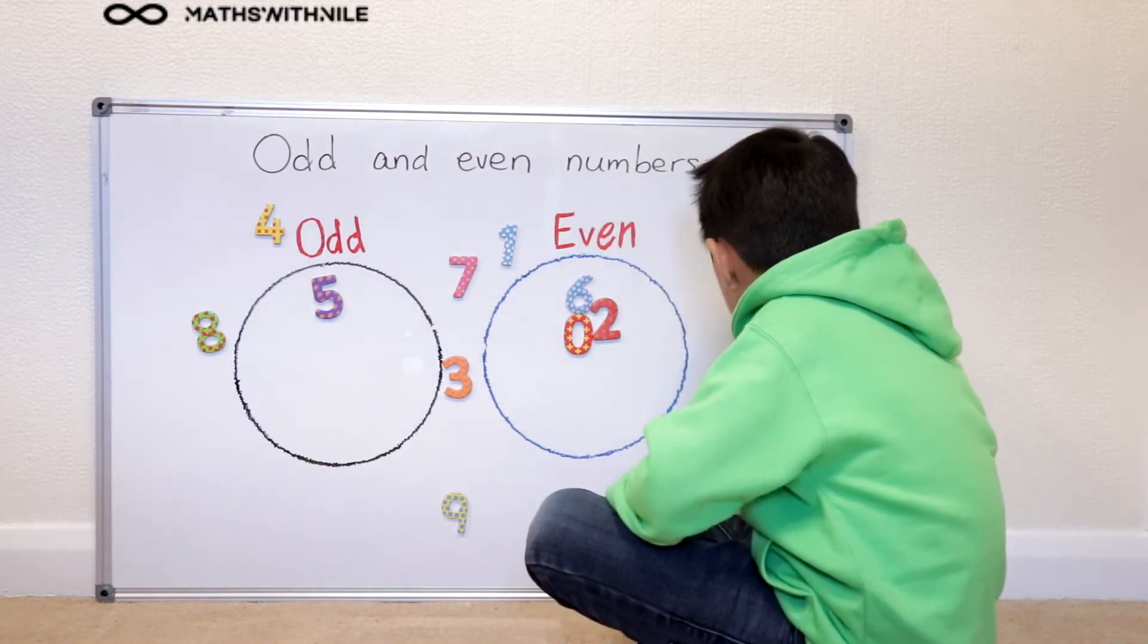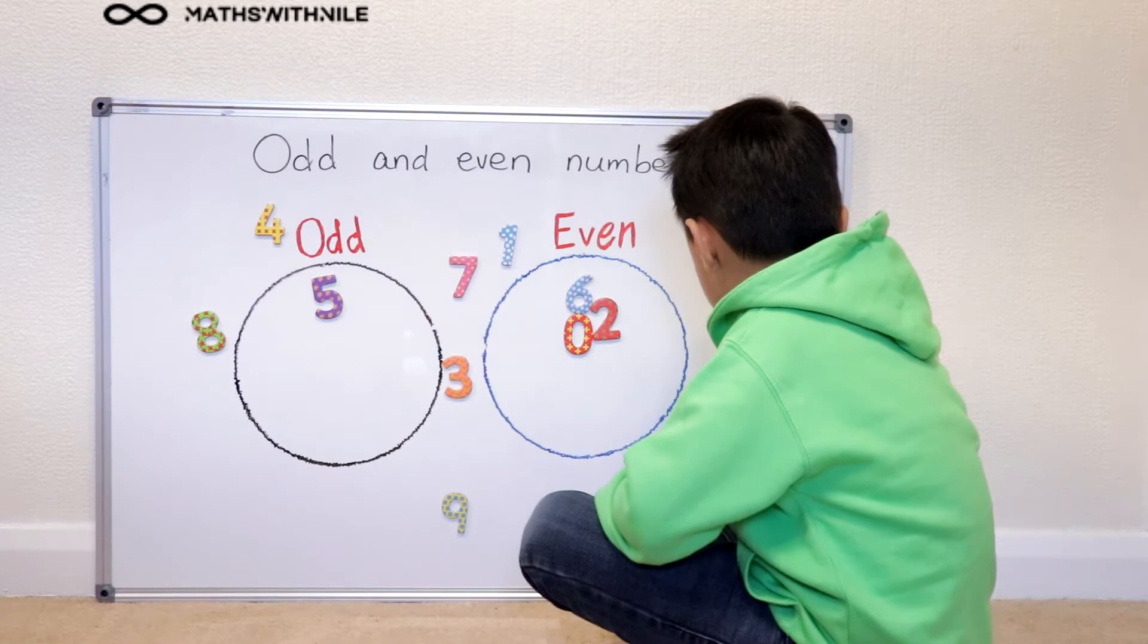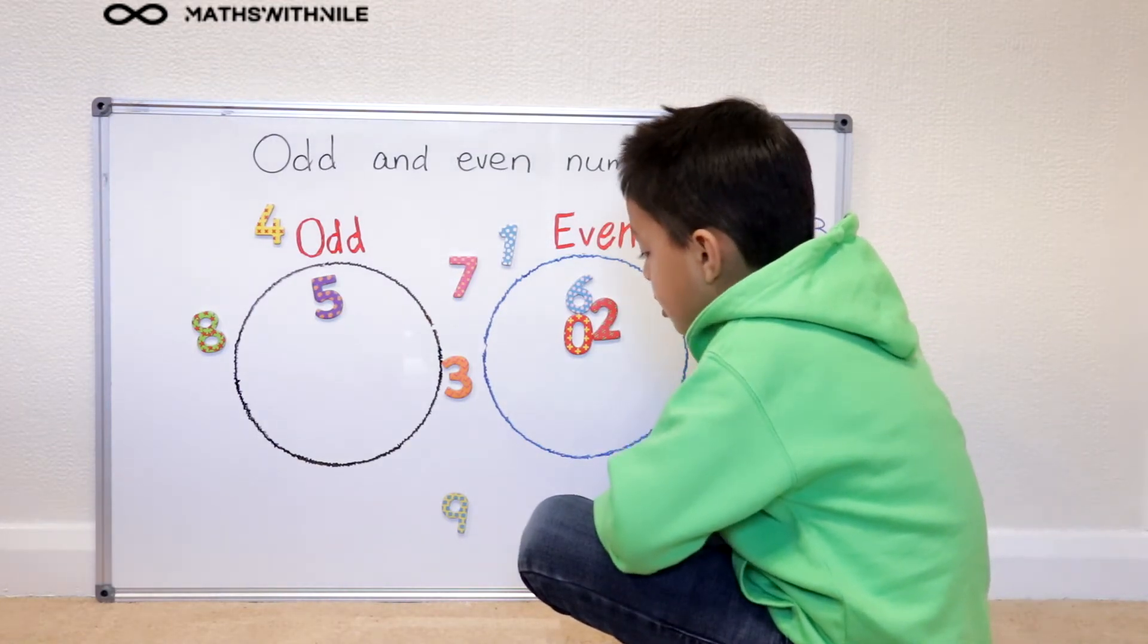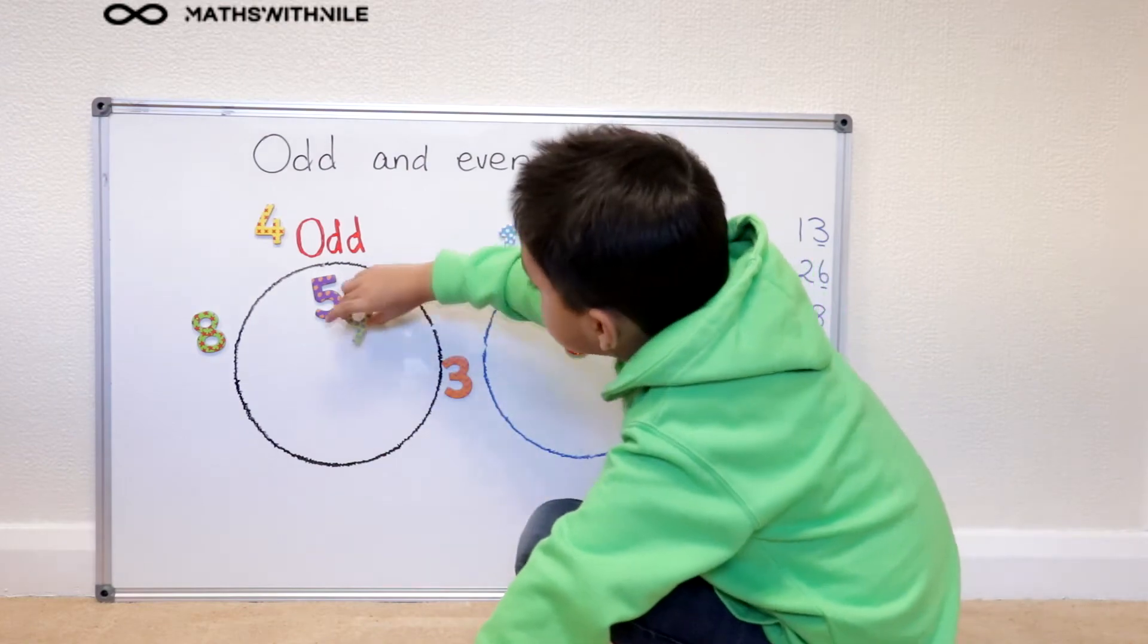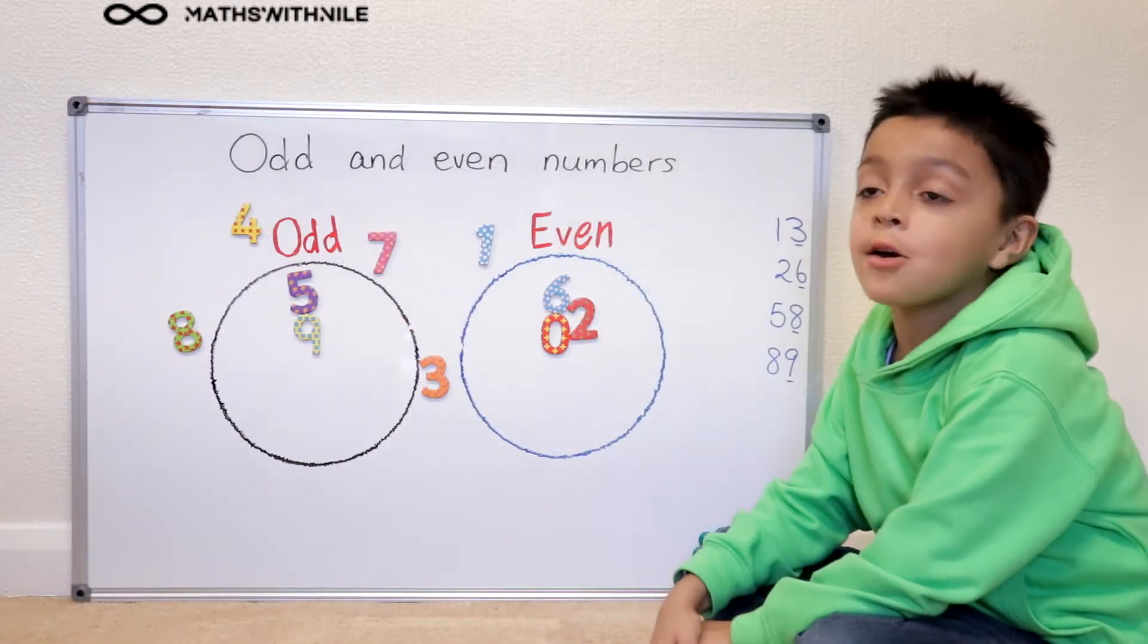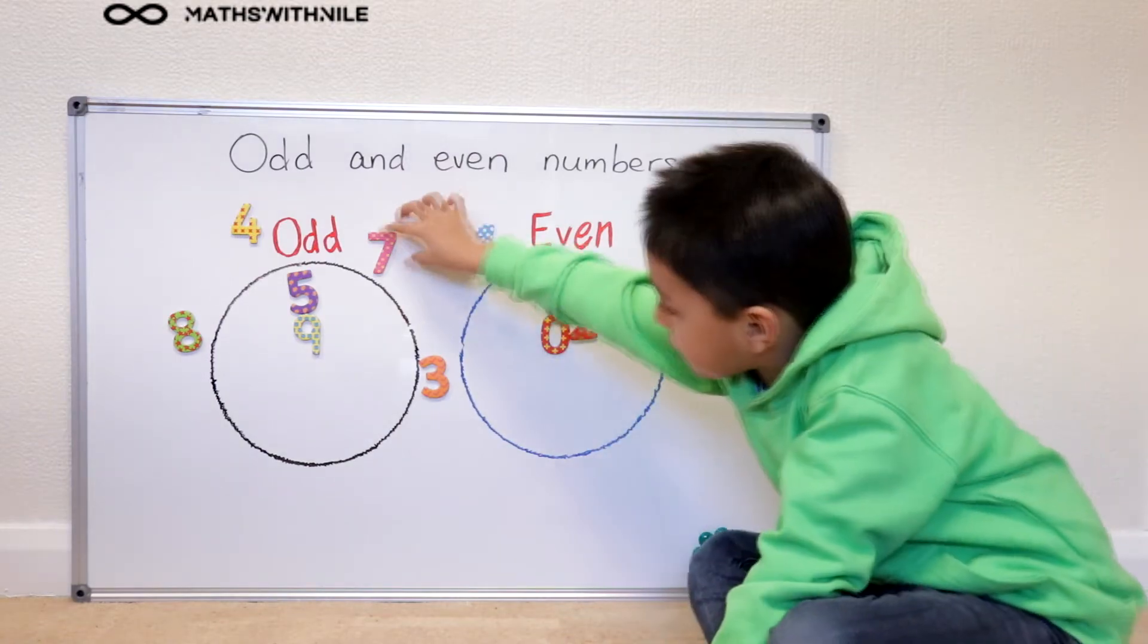So you can go in the odd number group. Now, I will choose the seven.